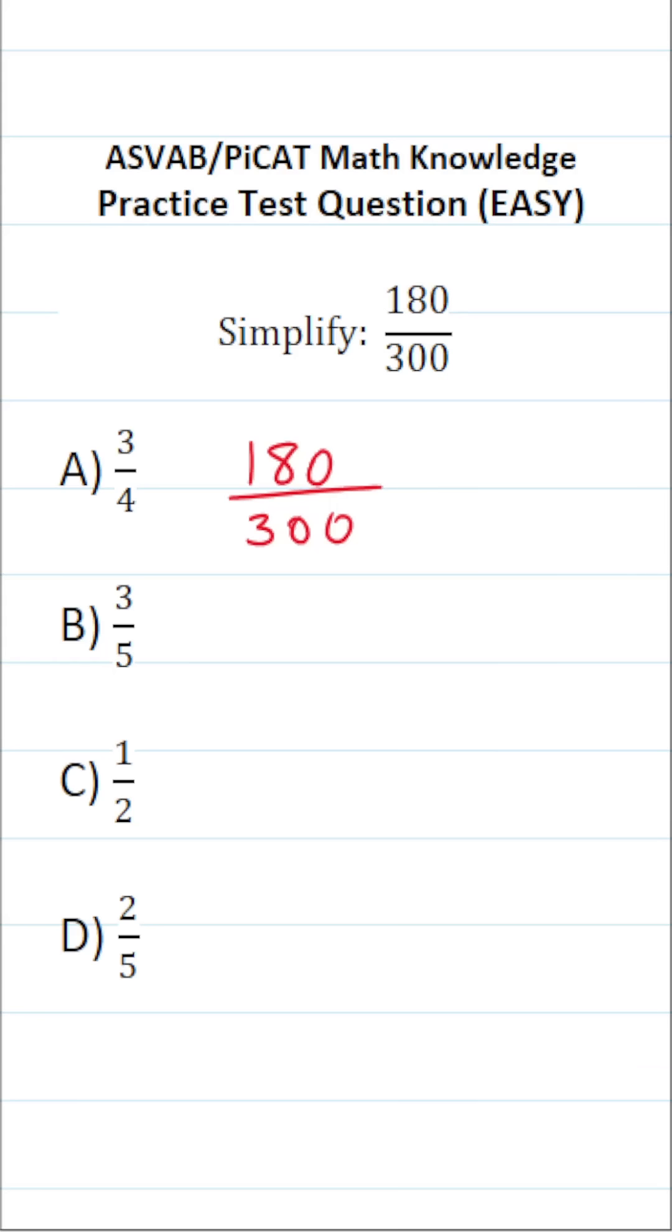So the first thing we're going to do to simplify this fraction is cross out these pair of corresponding zeros in our numerator and denominator. In doing so, that leaves us with the fraction 18 over 30.